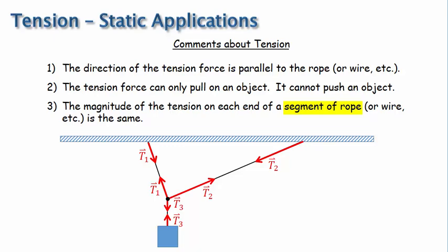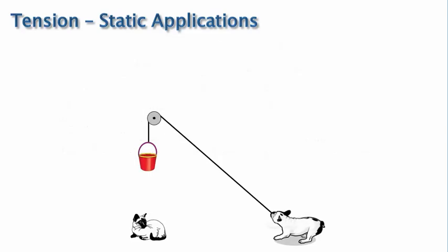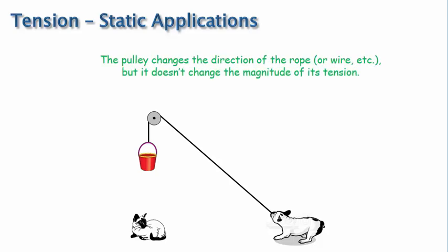The fourth comment I want to make about tension is that we will usually assume that the mass of the rope or wire, etc., is negligible as compared to the mass of the other objects involved. This assumption can greatly simplify our analysis. An interesting application is when the rope or wire, etc., goes through a pulley, like this. When a rope, wire, etc. goes through a pulley, we can typically neglect the mass and friction of the pulley, which means that the pulley changes the direction of the rope or wire, etc., but it doesn't change the magnitude of its tension.